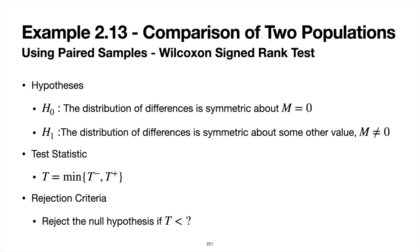Because under the conditions of the null hypothesis, the distribution of paired differences is symmetric — in fact symmetric about zero — we can apply the Wilcoxon signed rank test. We don't have to worry about asymmetry. The null hypothesis is that the distribution of differences is symmetric about zero. The alternative is that the distribution of differences has some other median. Since this is a two-tailed test, the test statistic T is the minimum of T-minus and T-plus.